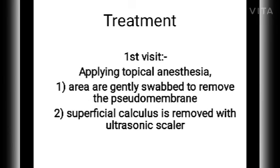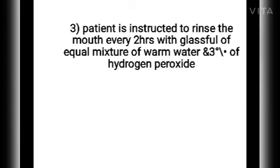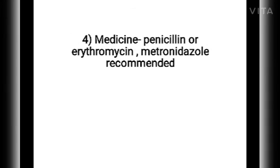ANUG can be treated in the clinic in three visits. In the first visit, local anesthesia is applied, the area is gently swabbed to remove the pseudomembrane, and superficial calculus is removed using ultrasonic scalers. The patient is instructed to rinse every two hours with a glass of equal mixture of warm water and 3% hydrogen peroxide. Medications such as penicillin, erythromycin, or metronidazole are prescribed.